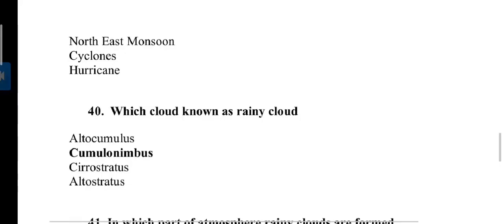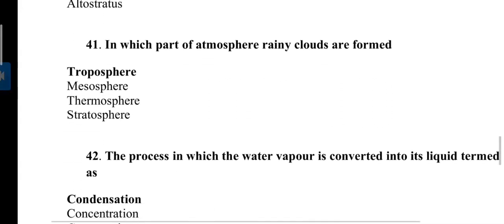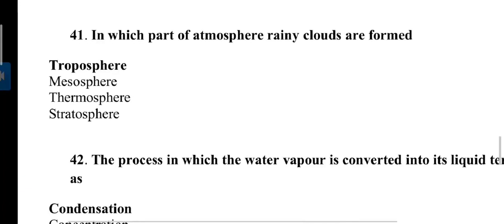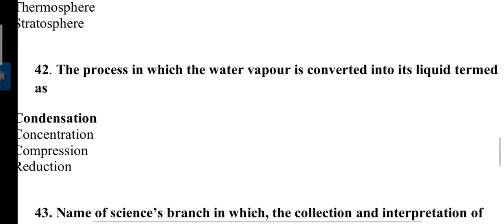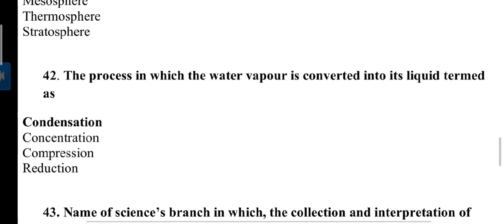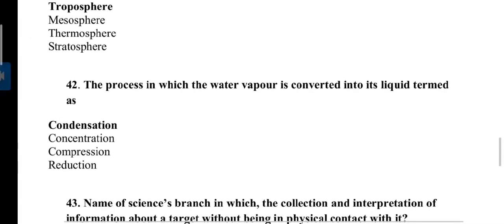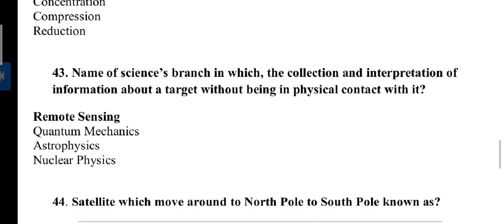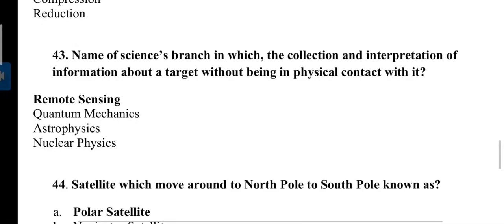Which cloud is known as rainy cloud? Answer is cumulonimbus clouds. Question: In which part of atmosphere are rainy clouds formed? Answer is lowest atmospheric level, troposphere. Water vapor is converted into its liquid, termed as condensation. Next, name the science branch in which collection and interpretation of information about a target without being in physical contact with it. Very simple question. It is remote sensing.